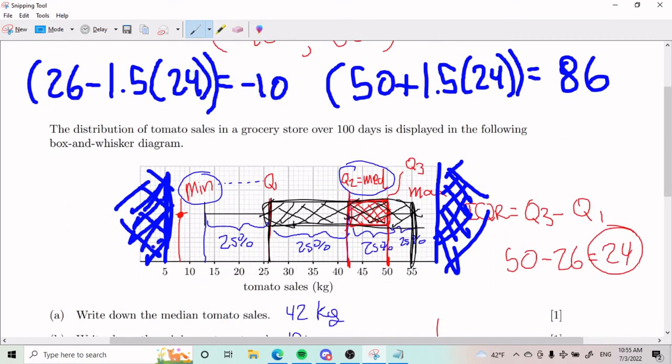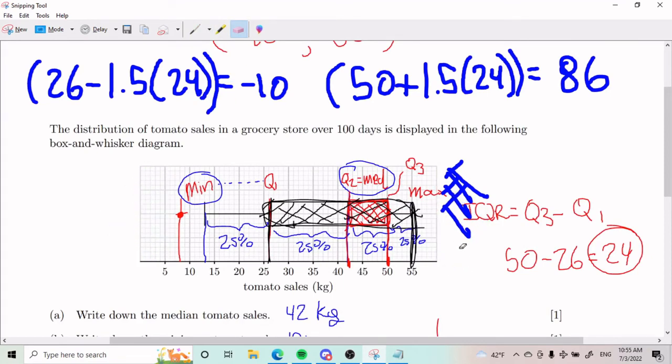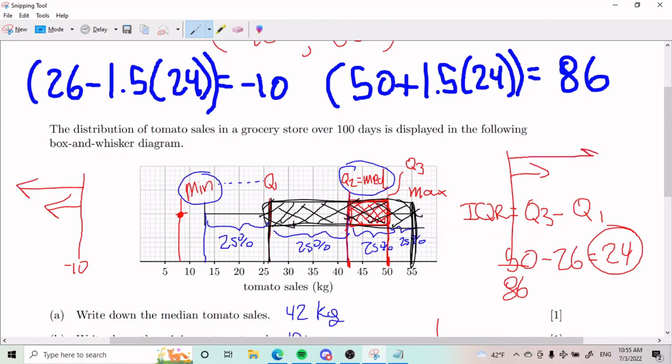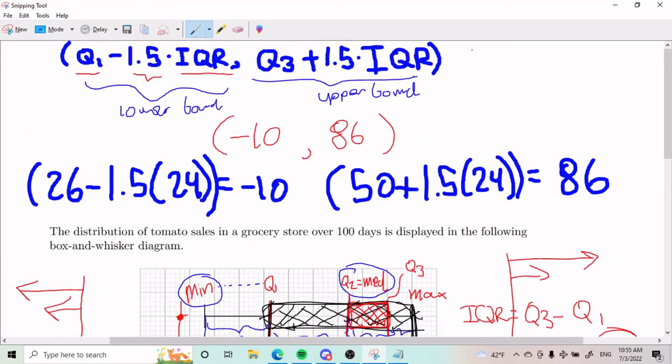So my bounds are going to be negative 10 and 86 on the other side. It goes all the way to negative 10, which must be around here, and all the way to 86, which I can't even draw because it goes over everything else. But it's important that we understand what it's telling us. Any numbers to the left of negative 10 or any data points to the right of 86 will be considered outliers. Why? Because we followed this formula and that's what it tells us.